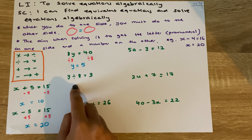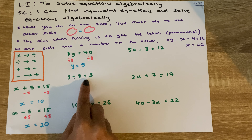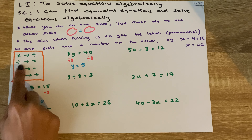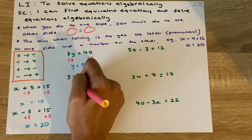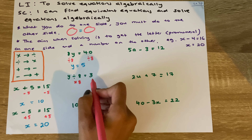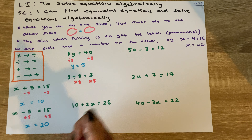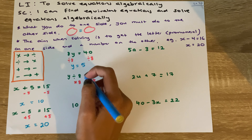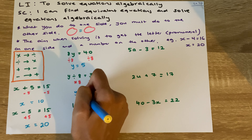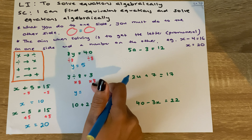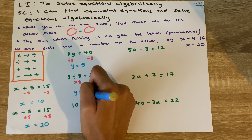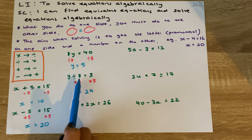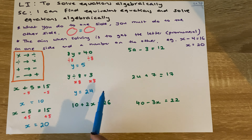Our last one-step case: y divided by 8 equals 3. The opposite of divide is times, so we multiply both sides by 8. That cancels on the left side, leaving y. And 3 times 8 is 24, so y equals 24. Checking: 24 divided by 8 is in fact 3, so that is correct.